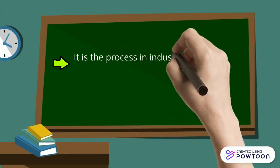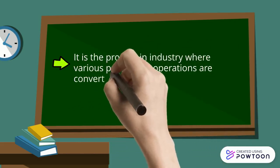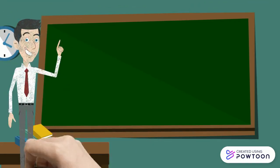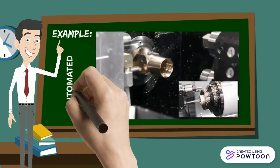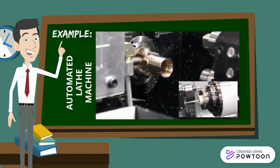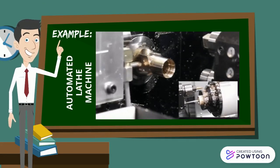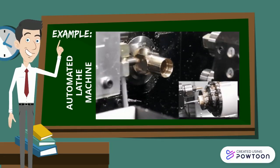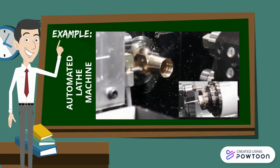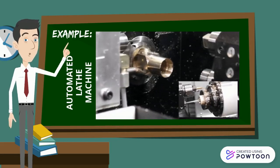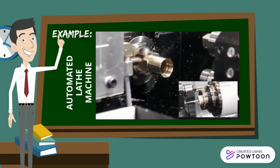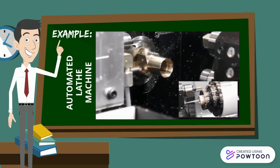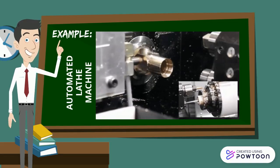Automation is the process in industry where various production operations are converted from manual to automated processes. For example, in an automated manufacturing process, workers place long lengths of bar into the feed mechanism of an automatic lathe. The lathe mechanism feeds the material into the chuck, turns the piece to the correct shape and size, and cuts it off the bar before beginning another item. Without automation, there would be a lack of automated operations when using such machines in manufacturing.